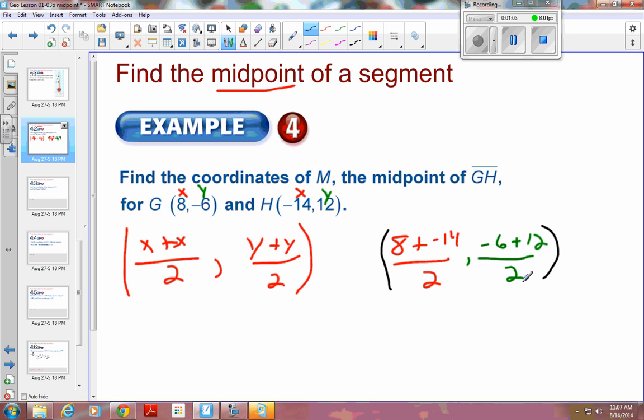And that are the coordinates of my midpoint. So 8 plus negative 14, 8 minus 14 is negative 6, divided by 2. And this is negative 6 plus 12, so 12 minus 6. 12 minus 6 is 6, divided by 2. And final answer, 6 divided by 2 is 3. So this would be negative 3 and positive 3, and that would be my midpoint.